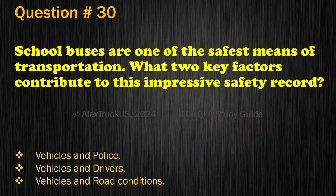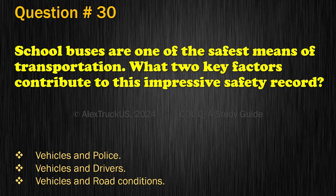Question 30. School buses are one of the safest means of transportation. What two key factors contribute to this impressive safety record? Vehicles and police; Vehicles and drivers; or Vehicles and road conditions. The correct answer is: Vehicles and drivers.